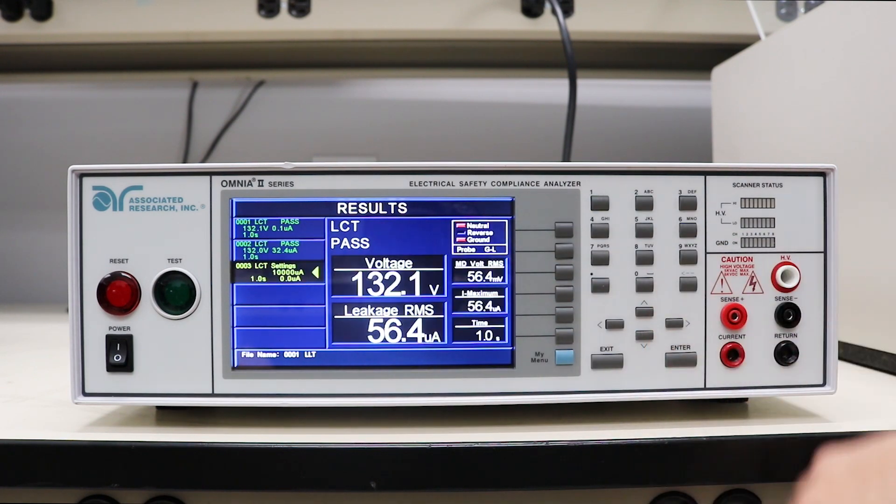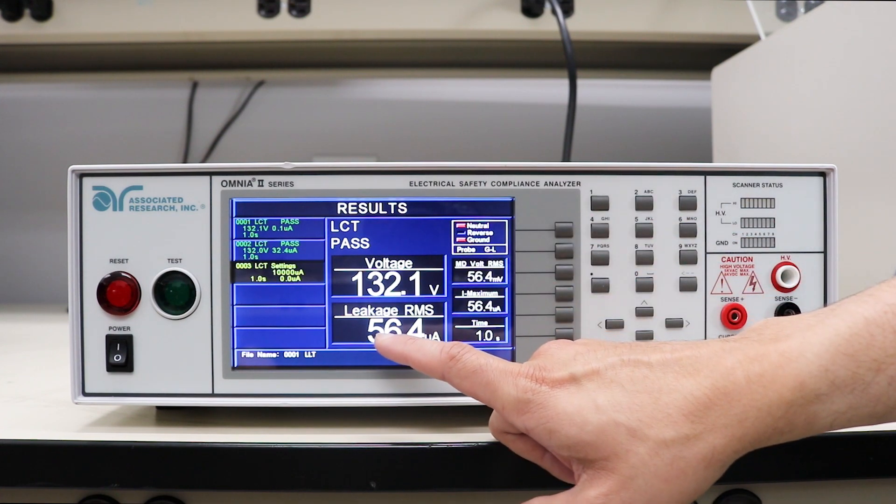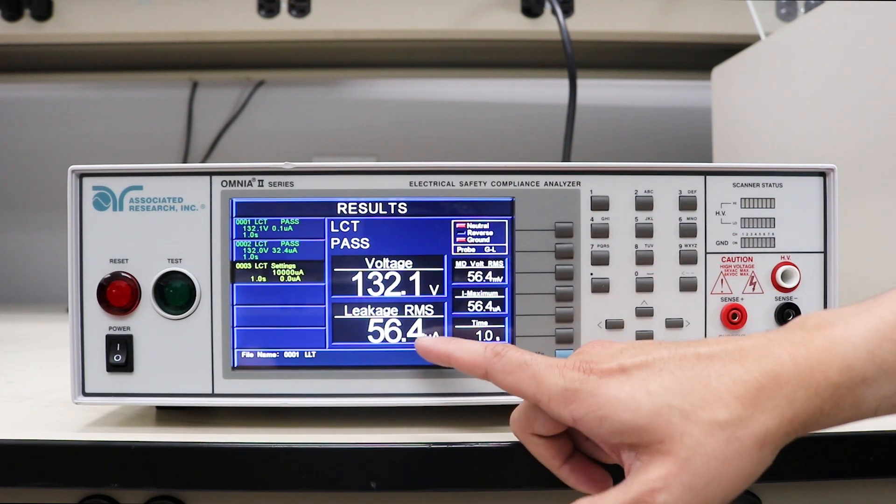In the last test step we have our neutral open as well as ground open. Look at the leakage current reading: up to 56.4 microamps.